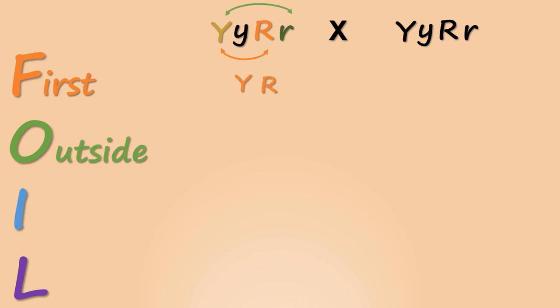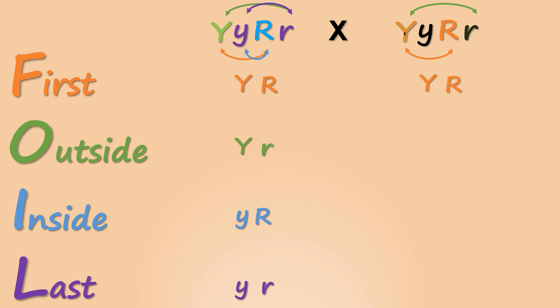To obtain the haploid gametes, we will use the FOIL method. First gamete which will give us capital Y, capital R. Then outside gamete which will give us capital Y, small r. Then inside gamete which will give us small y, capital R. And then last we will take the last gamete which will give us small y, small r. Similarly, we will do this for the next parental gamete to obtain the haploid gametes.